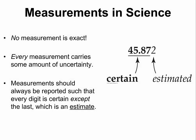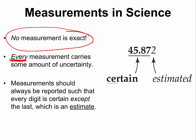The next question we want to answer is: how do we record measurements in science? The first thing to know about all measurements is that none of them is exact. That is a very bold claim — no measurement is exact because every measurement carries some amount of uncertainty in it. Now, what does that mean?